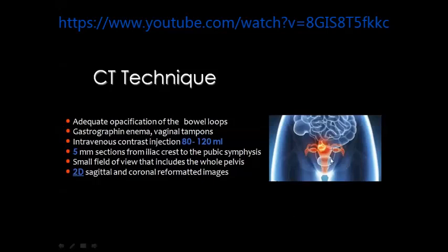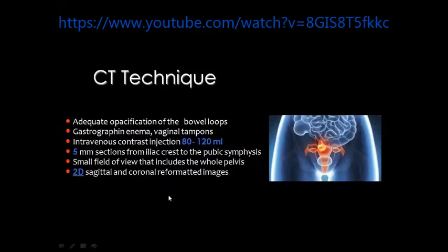In the CT technique we usually use some gastrografin to opacify the bowel loops, and we may need in specific cases to inject gastrografin in the rectum to opacify the distal part of the colon. Sometimes we need to put vaginal tampons, especially whenever we are evaluating lesions in the uterine cervix or lesions in the proximal part of the vagina.